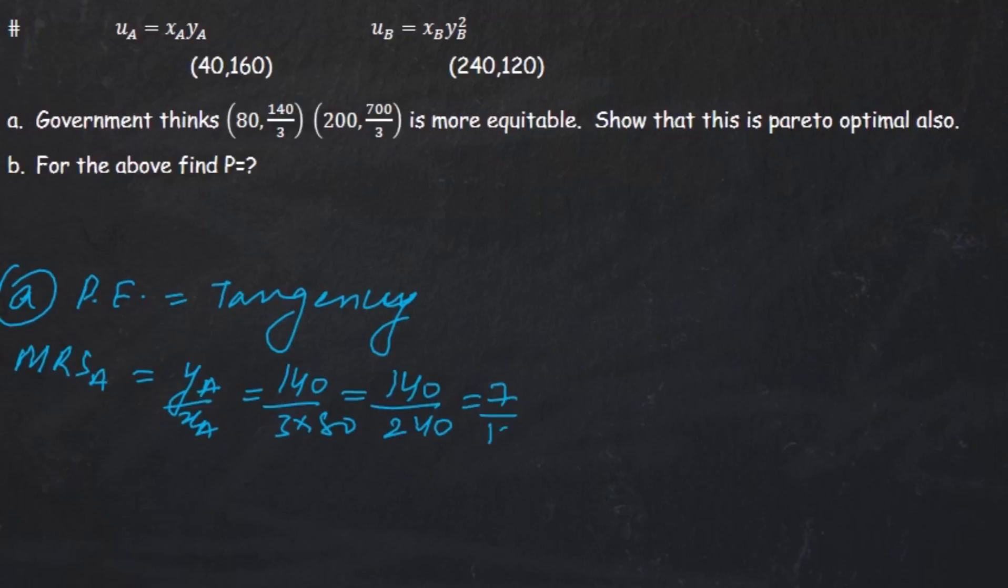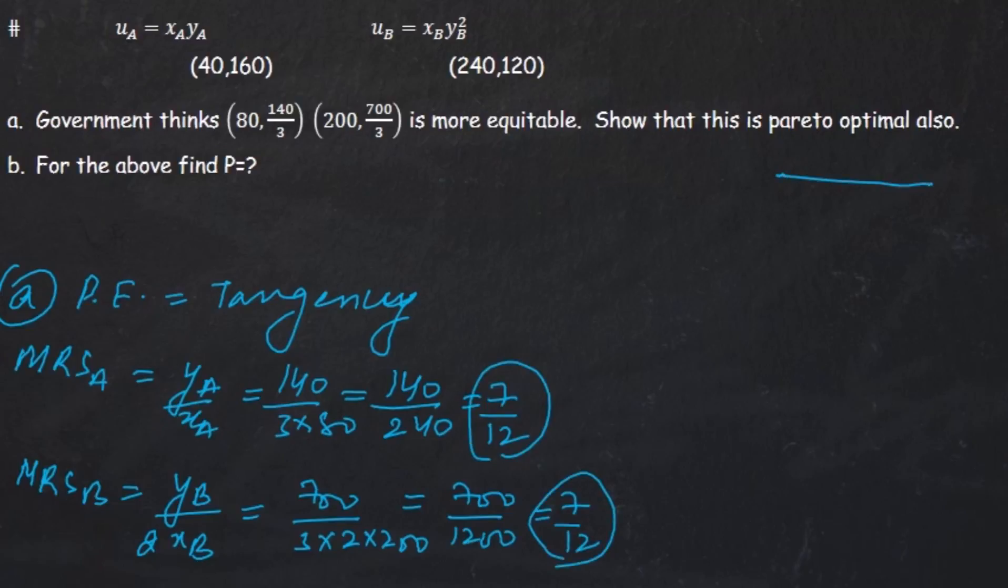MRS of B is going to be yB upon 2xB. You can figure that out from the function. Which is going to be 700 by 3 times 2 times 200, which is nothing but 700 upon 1200, which is again 7 by 12. Since 7 by 12 is equal to 7 by 12, that's why it is Pareto optimal. Because MRS of A is equal to MRS of B. If MRS of A is equal to MRS of B, what do we have left here? We have price. Price is obviously price, which we have done in the second welfare theorem. We have said that all Pareto optimal points are in equilibrium. So we have figured that the point of tangency, the slope is 7 by 12. So if I add a line in the middle, what will the slope be? Of course, 7 by 12. Because that line is going to pass to the tangency. So if it passes the tangency, the slope will be the same, which is 7 by 12.